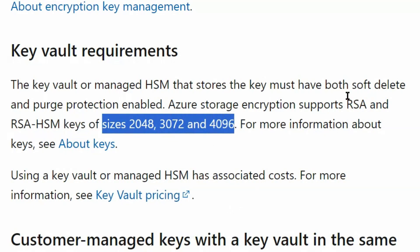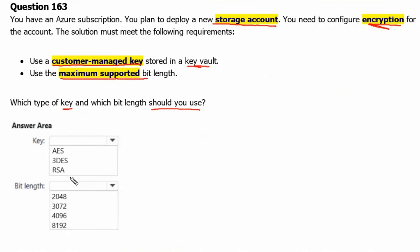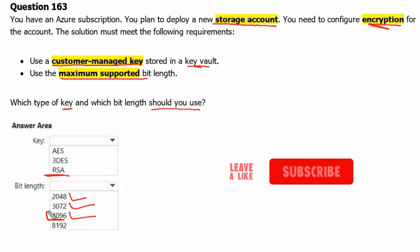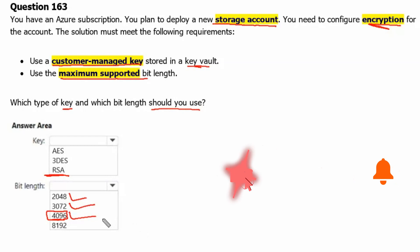Let's move back to the question. Azure storage encryption supports RSA keys and the supported bit lengths are 2048, 3072, and 4096. Therefore, the maximum supported bit length is 4096. That is the correct answer.